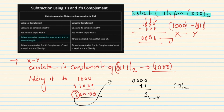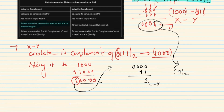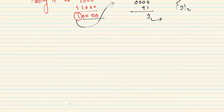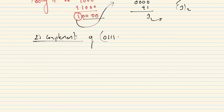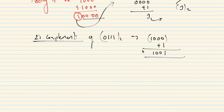For two's complement method: one's complement of y is found, then two's complement is one's complement plus 1. Y is 1 1 1, so one's complement is 0 0 0, and two's complement is 0 0 0 plus 1 equals 0 0 1.